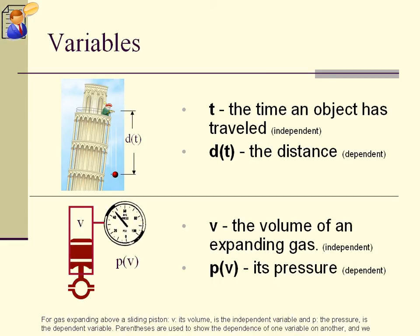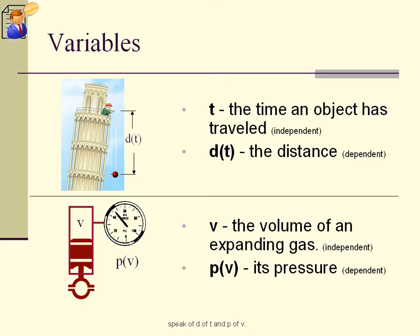For gas expanding above a sliding piston, v, its volume, is the independent variable, and p, the pressure, is the dependent variable. Parentheses are used to show the dependence of one variable on another, and we speak of d of t and p of v.